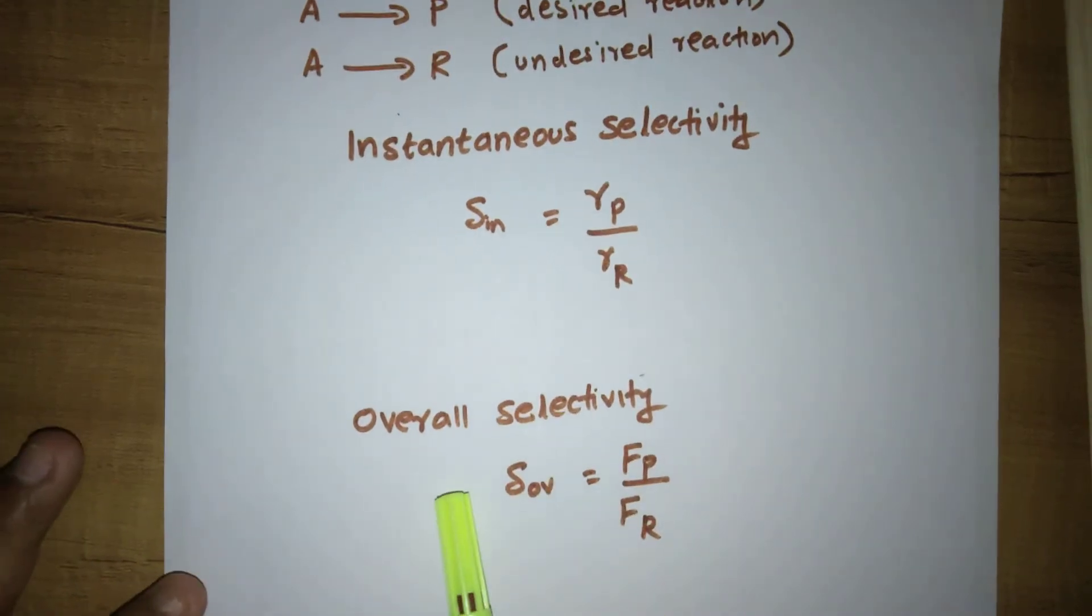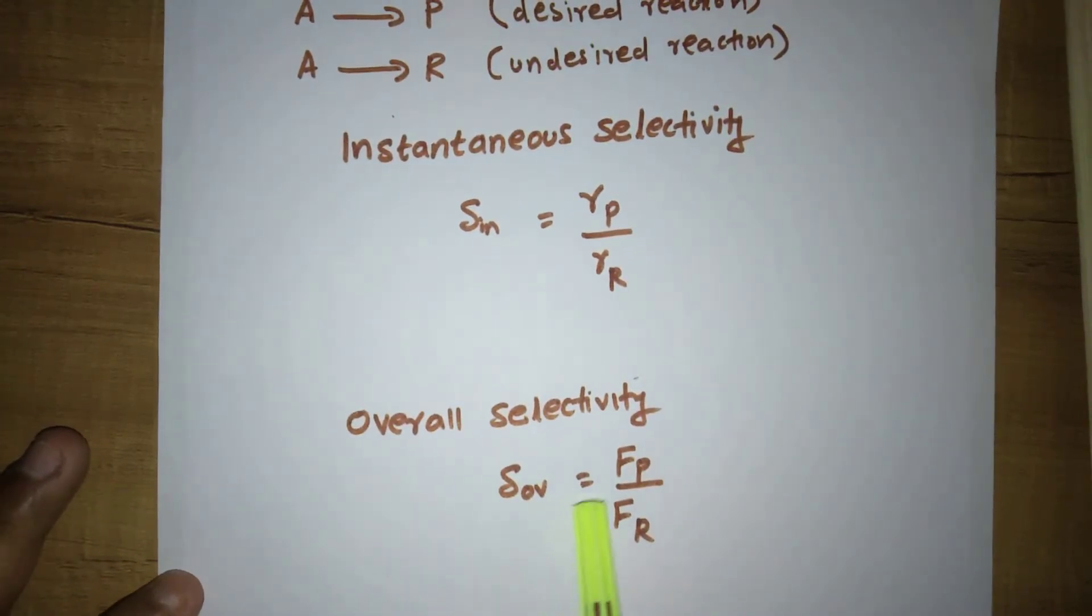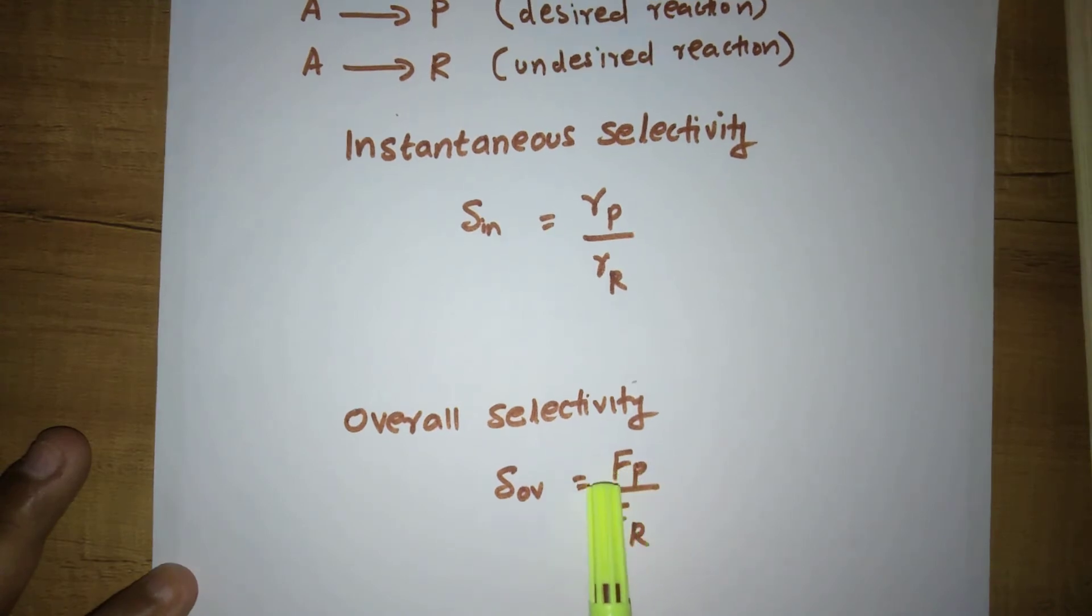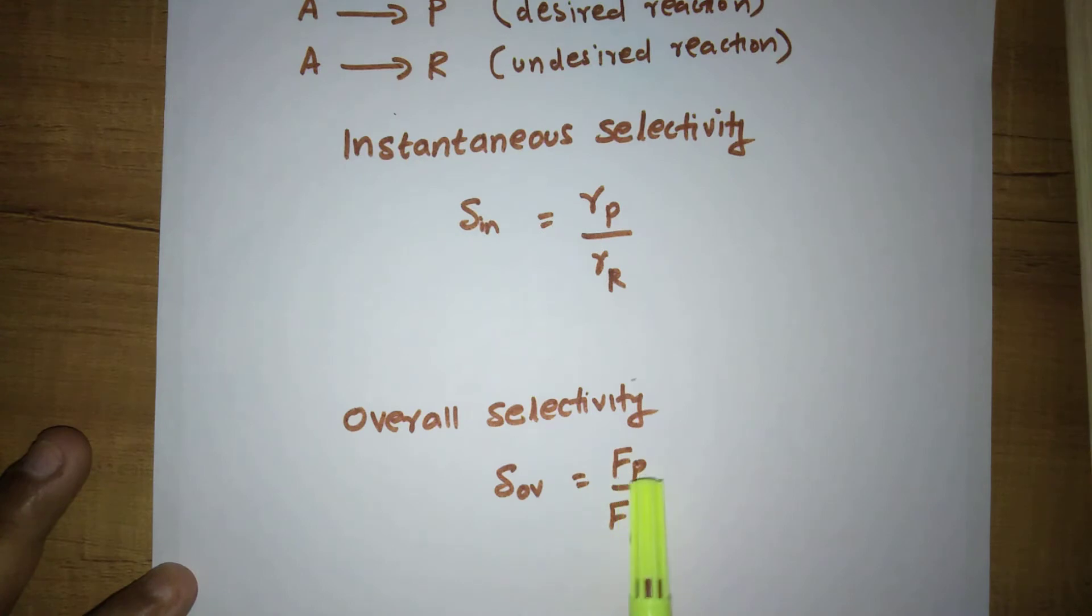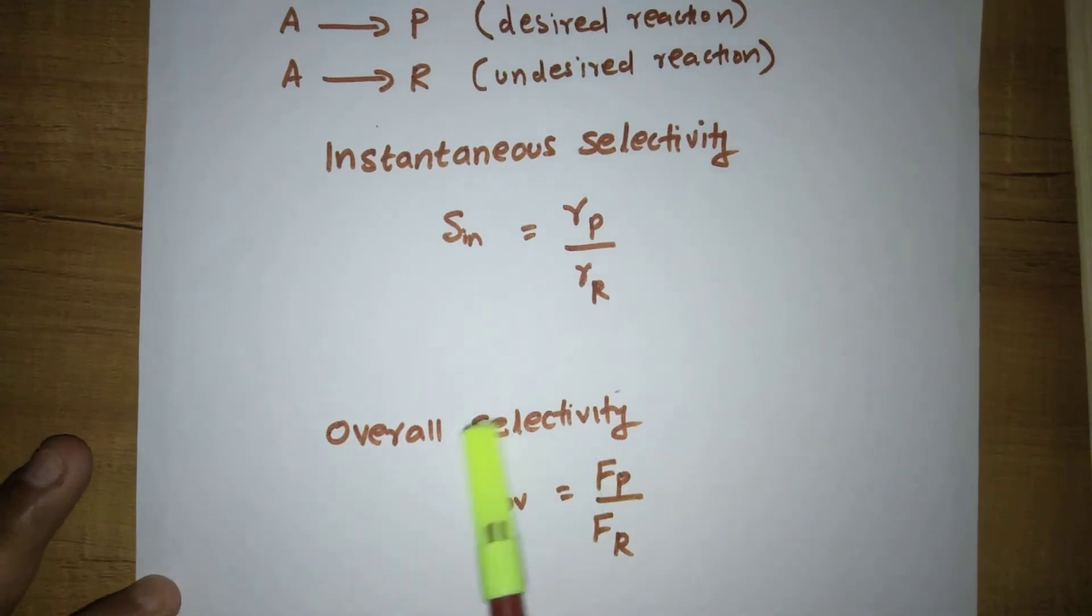And what is overall selectivity? That equals F_P by F_R, molar flow rate of desired products to the molar flow rate of undesired products. This is selectivity.